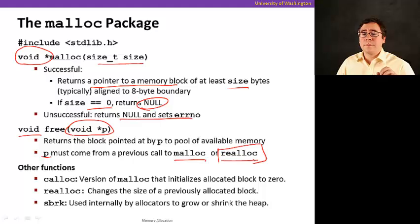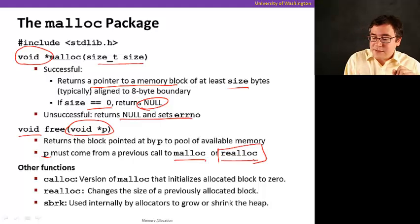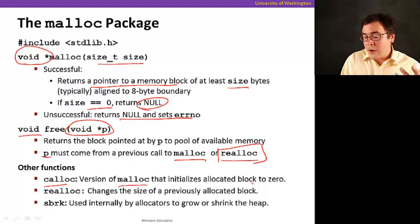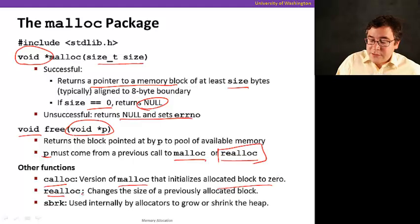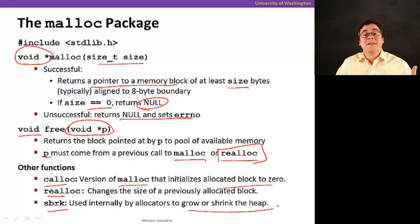So let me give you an example. By the way, the other functions are also calloc, that is essentially another version of malloc that sets the allocated block to zero. Realloc just resizes the block. And sbrk is used internally by the allocator to grow or shrink the size of the heap. That's a system call.